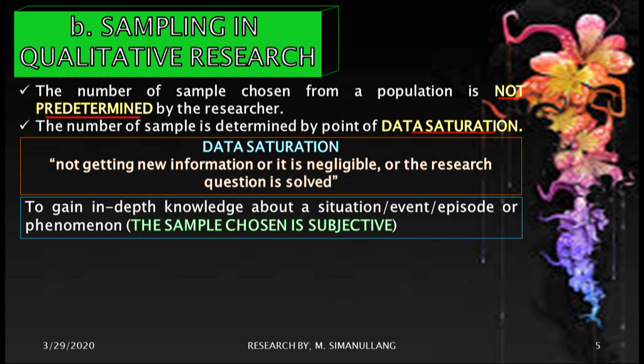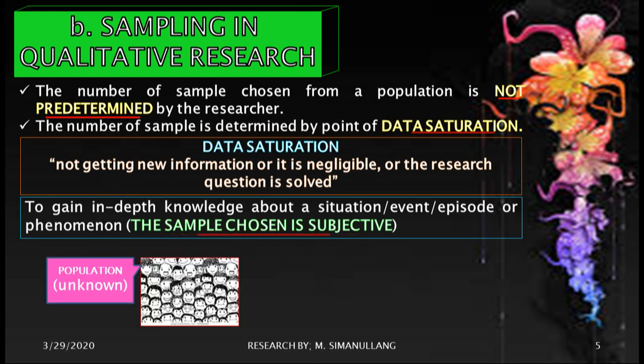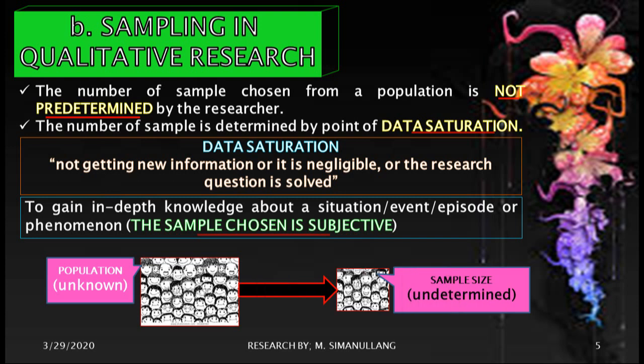The purpose of qualitative research is to gain in-depth knowledge about a situation, event, episode, or phenomenon. Therefore, in choosing the sample the researcher is subjective. In qualitative research the population is often unidentified or unknown, and the number of the sample is also undetermined — determined by data saturation.